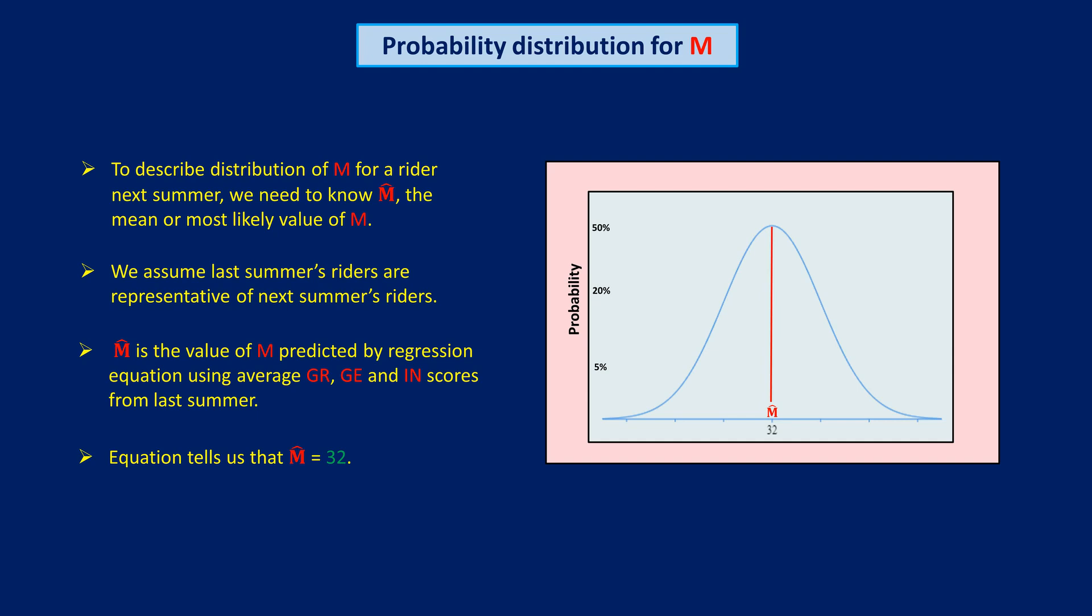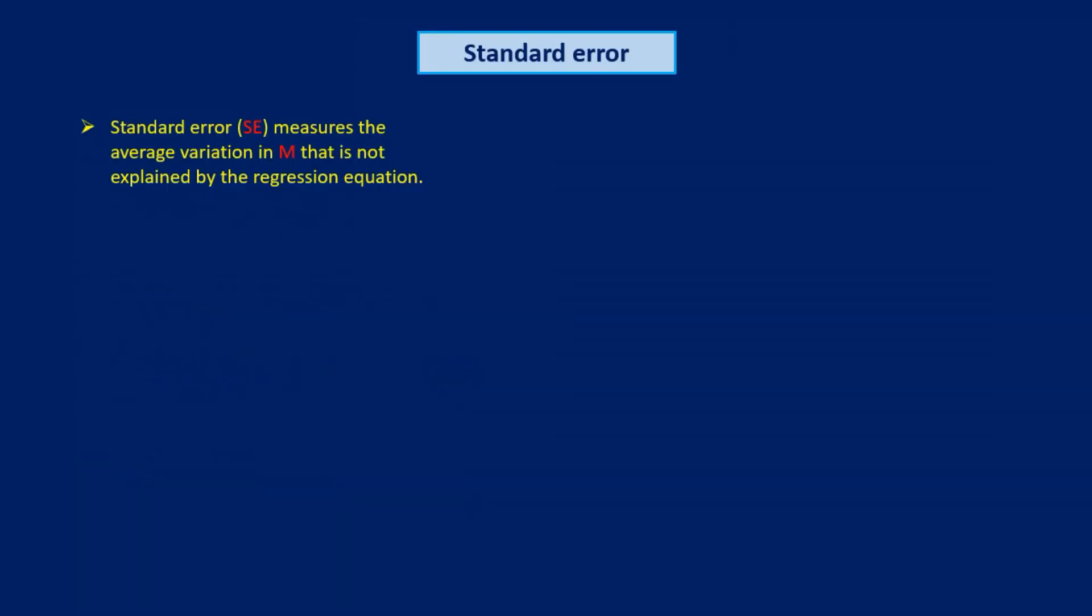The other thing we need to know to build the probability distribution for M is what is called the standard error of M. Standard error measures the average variation in M that is not explained by the regression equation, and it's usually indicated by the letters SE. When Linus estimated the regression equation for last summer's riders, it also calculated the SE of M.